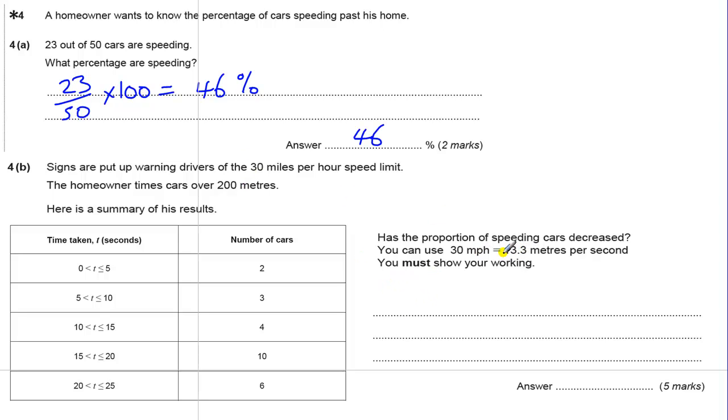We're told that 30 miles per hour is 13.3 meters per second. We know that he's timed them over 200 meters. So those are our key points. So 200 divided by 13.3 gives us our time to do 200 meters if you're travelling 30 miles per hour, because time is equal to distance divided by speed.